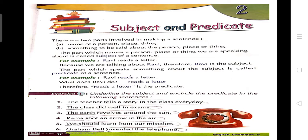Ravi kya kar raha hai? Reads a letter — so it is your predicate. Now let's discuss the exercise which is given in your book on page number 11, exercise one. In this you have to underline the subject and encircle the predicate in the following sentences. See the first sentence: 'The teacher tells a story in class every day.' We are talking about the teacher, so 'the teacher' is the subject. 'Tells a story in the class every day' is your predicate.